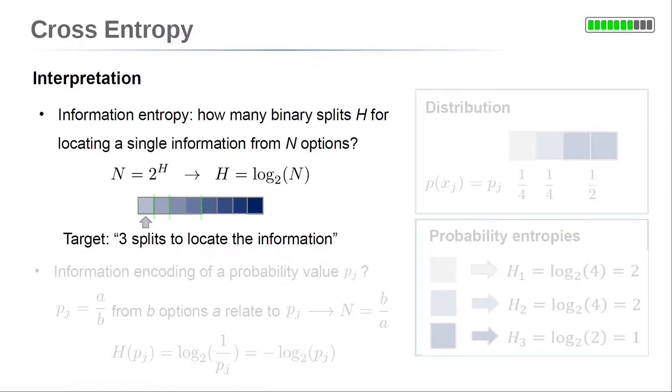To understand this, let's start by considering how many binary splits capital H are needed to locate a specific information among capital N possible options. In our example, we have 8 different options symbolized by grey and blue squares. We seek for an arbitrary square, for example, the square on the left. A split divides the 8 options into 2 halves. Then we consider here the left half of the split. Another split is performed. Then a last split locates the information. So, in total, 3 binary splits are needed to locate an information out of 8 options.